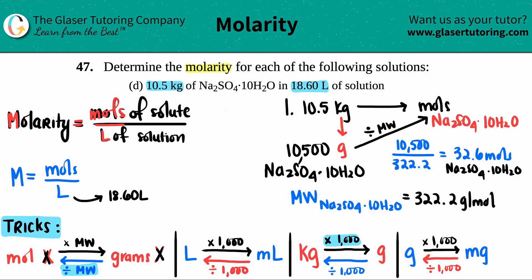Now we finally have the mole value. This is 32.6 moles. Now I have the two values I can solve: capital M equals 32.6 divided by 18.60.